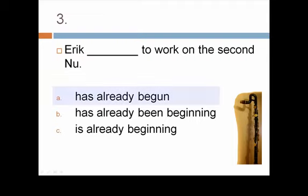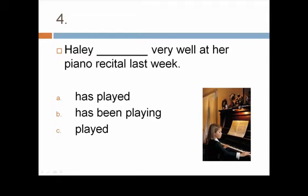The present perfect is the best answer here because we're referring to a past experience that never happened. It's a reference to the general past — no specific point in time. The best answer is A. Eric has already begun to work on the second new. There is no need for a progressive tense here because we're not emphasizing a process or an unfinished action. The act of beginning the work is finished. It's complete. But we're not being specific about when this event took place. The best choice is the present perfect.